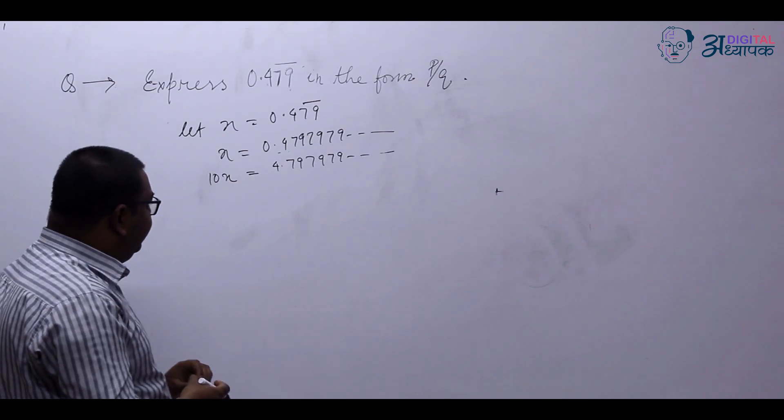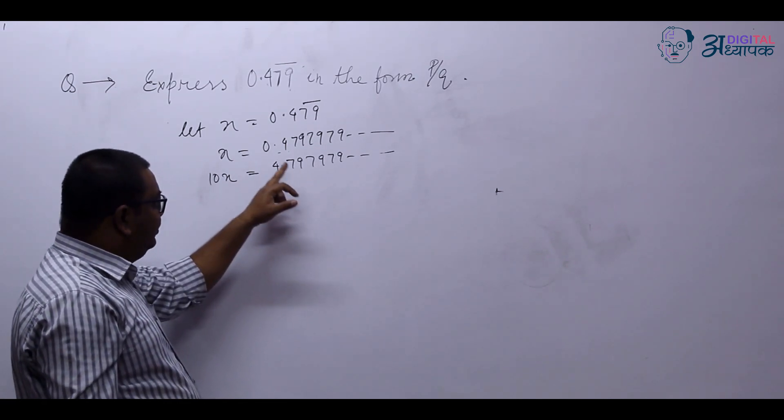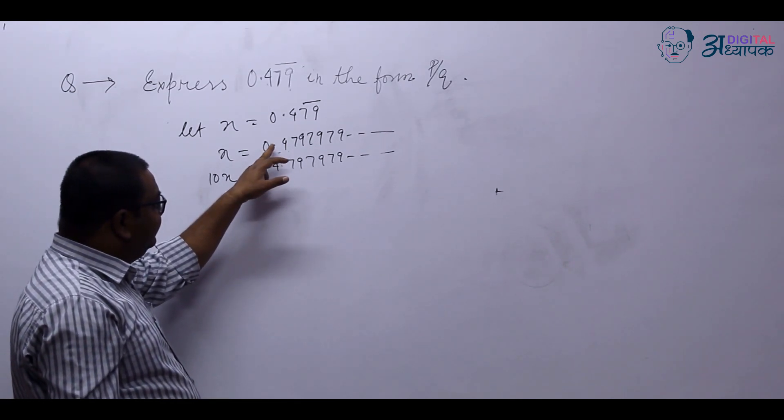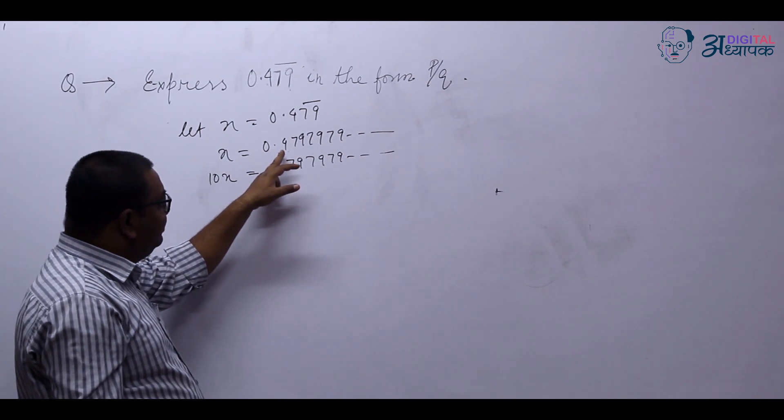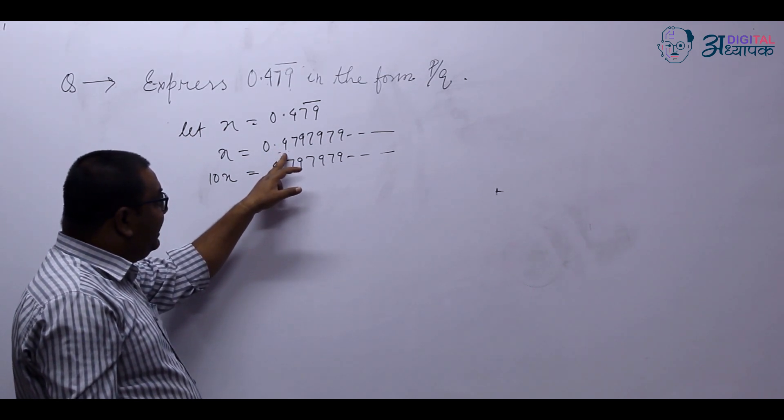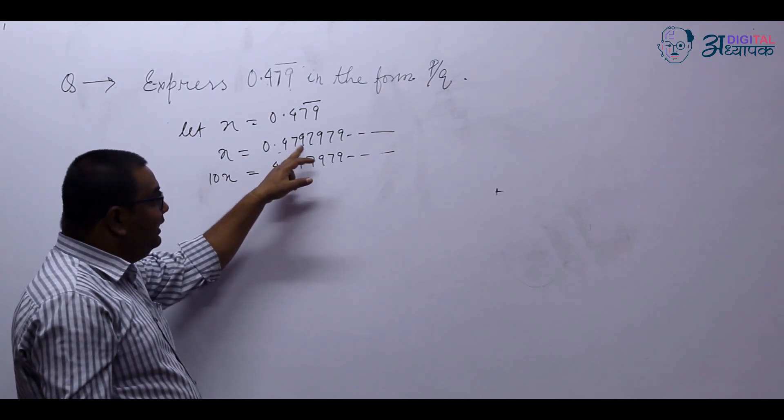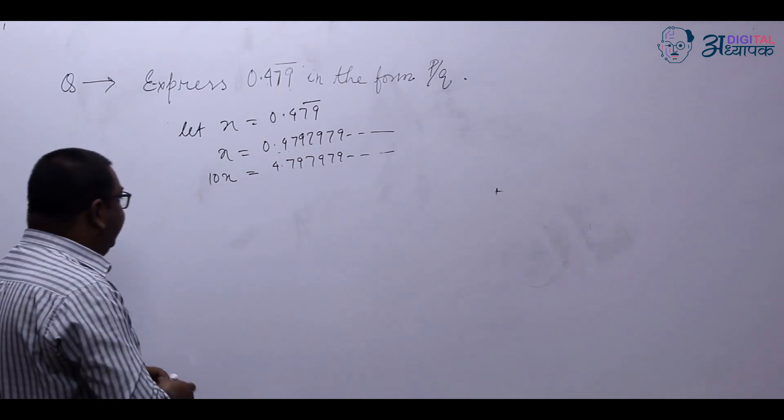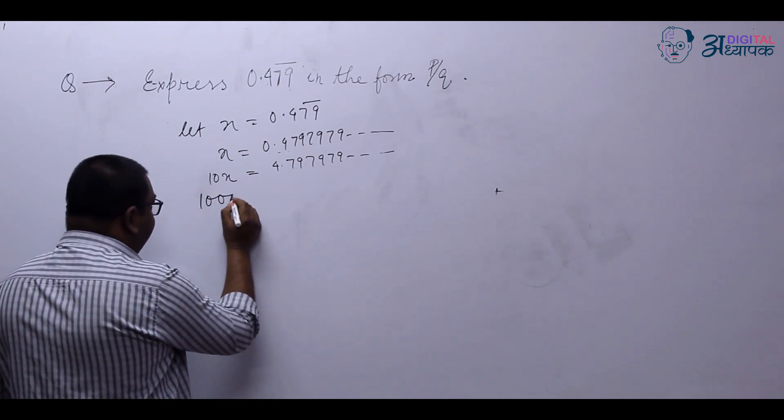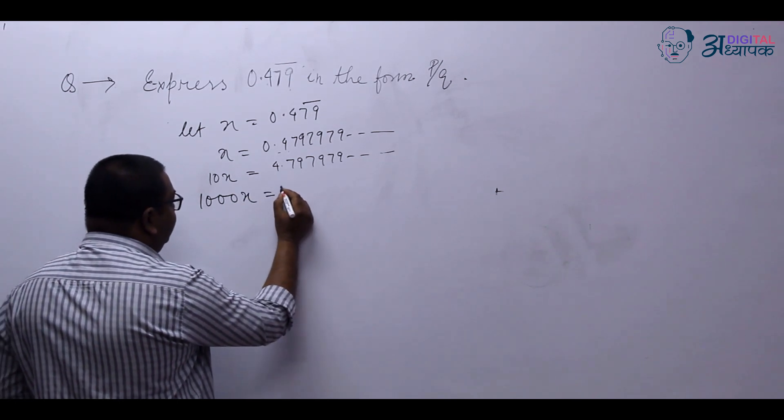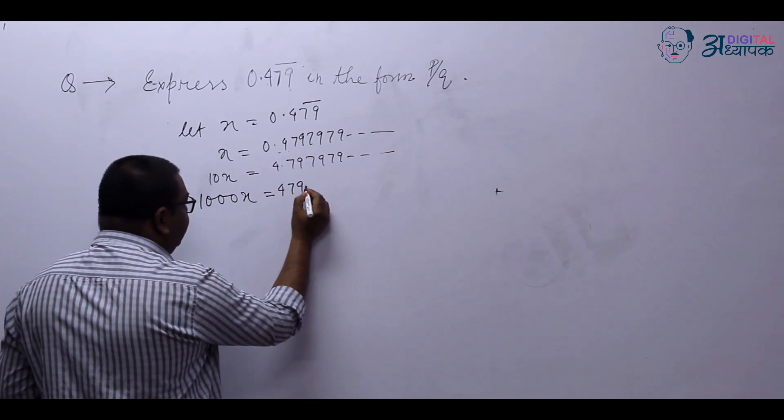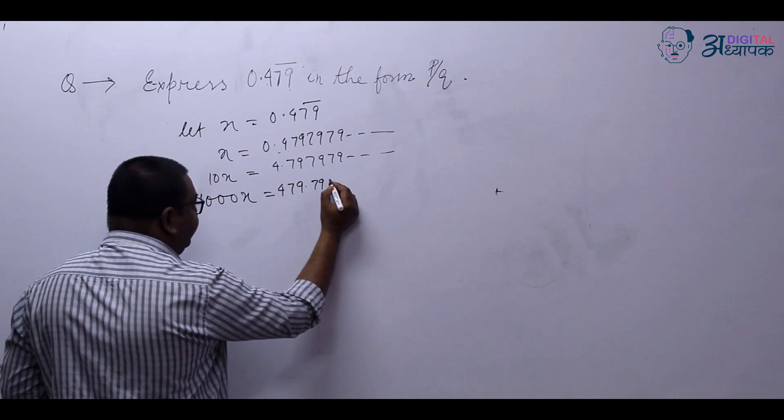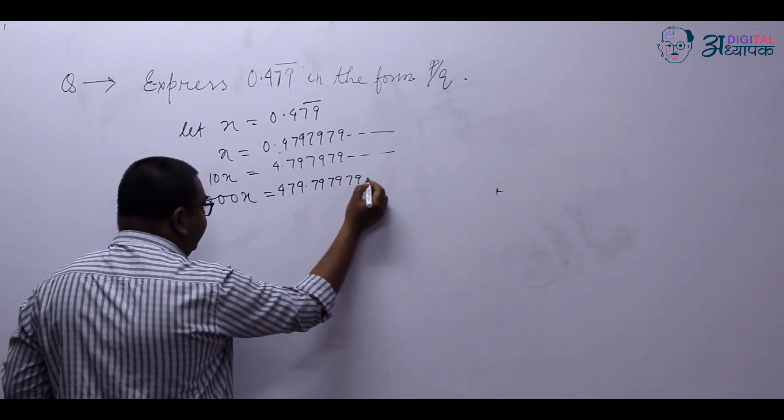Now we have to shift the place after 79. So we have to shift the decimal place after 79. So 1000x is equal to 479.7979 and so on.